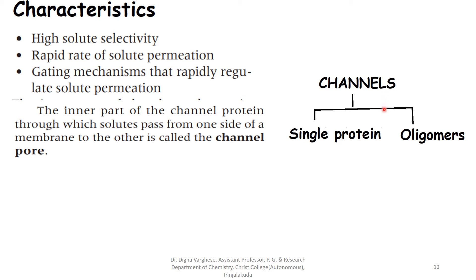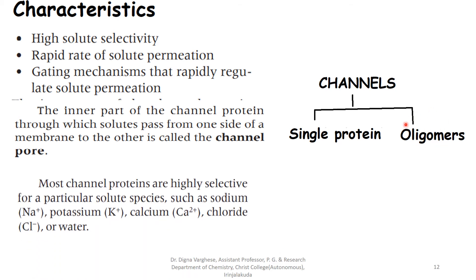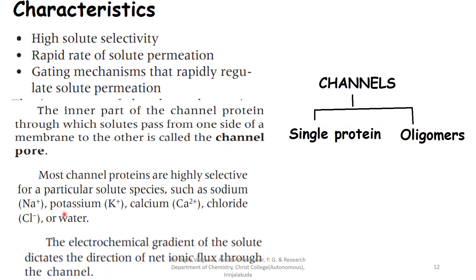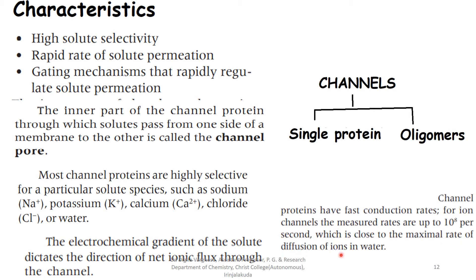Channel proteins are of two types. Some channels consist of a single protein whose transmembrane segments form a pore. Others exist as oligomers of identical or different alpha subunits that together form a pore. Most channel proteins are highly selective for a particular solute species such as sodium, potassium, calcium, chloride, or water. The electrochemical gradient of the solute dictates the direction of net ionic flux through the channel. Channel proteins have fast conduction rates — measured up to 10⁸ per second — which is close to the maximal rate of diffusion of ions in water.